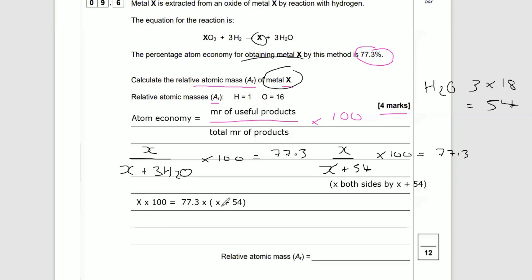So we're now going to have X times 100 is equal to 77.3 times by, in brackets, and this is the bit where a lot of people will make a mistake this next step, X plus 54.